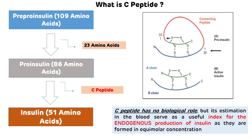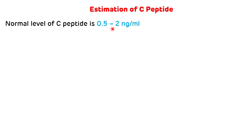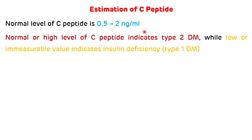The estimation of C-peptide can be done from the blood as well as from the urine. The normal level of C-peptide is 0.5 to 2 nanogram per ml. The estimation of C-peptide is helpful in differentiating type 1 diabetes mellitus from type 2 diabetes mellitus. If the C-peptide level is normal or high, it indicates type 2 diabetes mellitus. If there is a low or immeasurable value, it indicates insulin deficiency, that is type 1 diabetes mellitus.